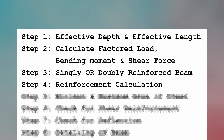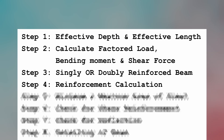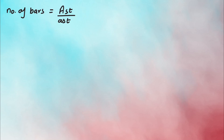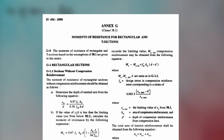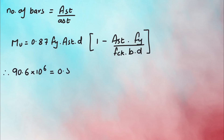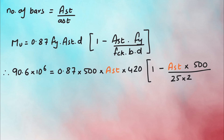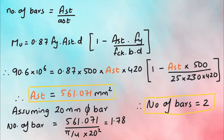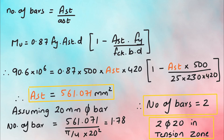Step 4 is the reinforcement calculation. AST is calculated from the relevant formula, and substituting the values gives the required area of steel as 561 mm². Assuming 20 mm diameter bars, the number of bars required to provide 561 mm² of steel is 2 bars in the tension zone.